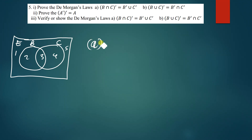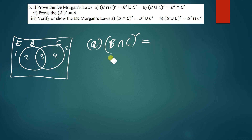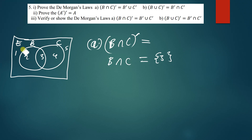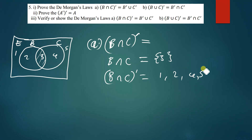So set B and C — I'll put numbers: we have 1, 2, 3, 4, 5. Now for the first law, (B∩C)ᶜ. When we find B∩C, that is simply just 3. So if we find the complement of B∩C, we are talking about the numbers that are outside this intersection part. So (B∩C)ᶜ is therefore going to be 1, 2, 4, and 5.